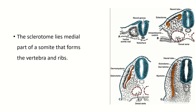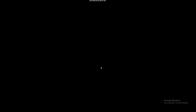The sclerotome lies in the medial part of the somite and forms the vertebra and ribs. You can see the location of the sclerotome — it surrounds the neural tube and forms the vertebra. Thank you for watching, please subscribe to my channel.